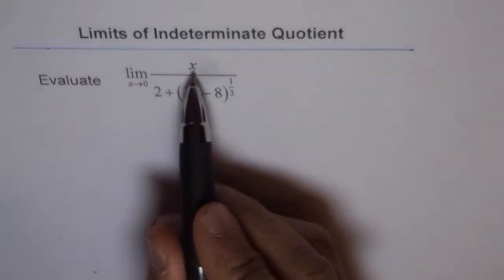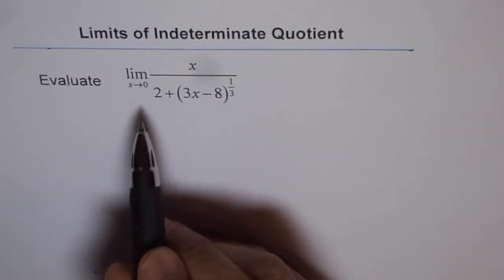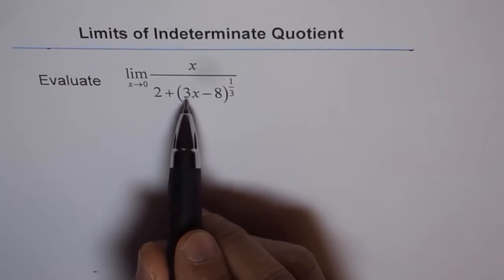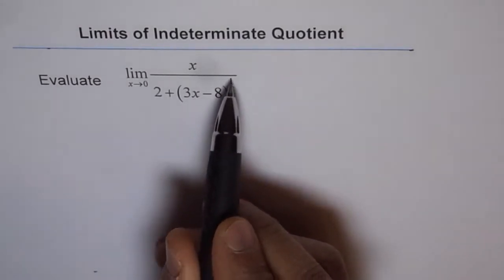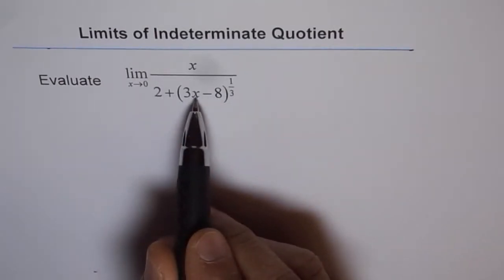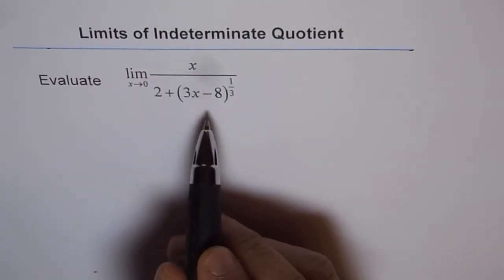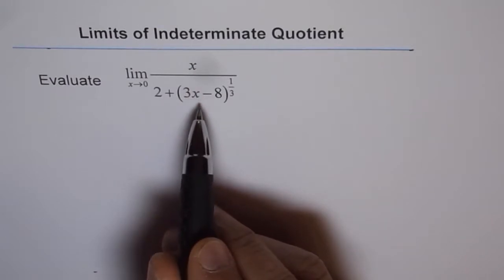Now if I plug in 0 here, I get 0 in the numerator and in the denominator I get 3 times 0 is 0, minus 8 to the power of 1 over 3 is minus 2, so 2 minus 2 is 0, so I get 0 over 0. So this is indeterminate.